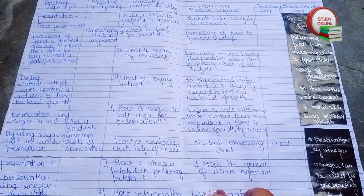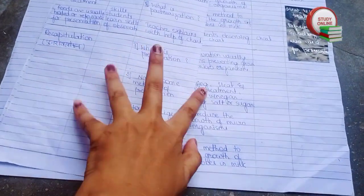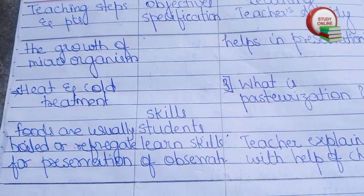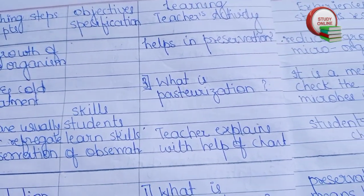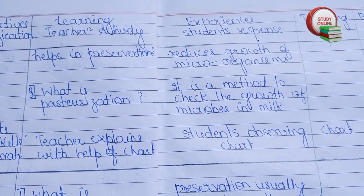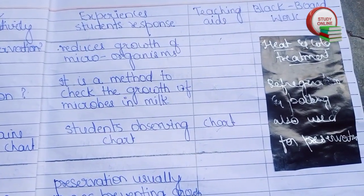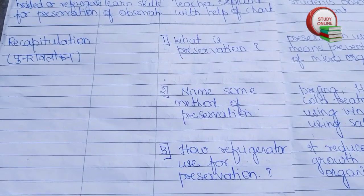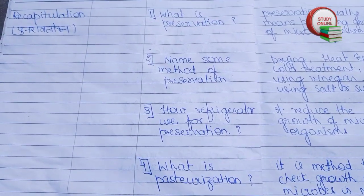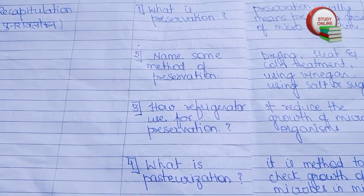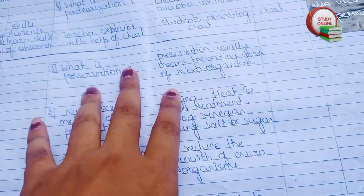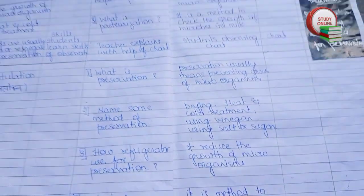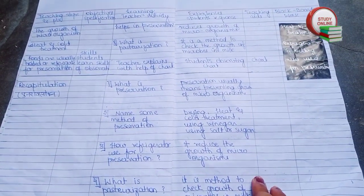Let's see the rest of presentation two. All the explanations we have to present to students, we write like this. Here are the questions and answers from students. For skills, the teacher explains with the help of a chart and students observe the chart. For recapitulation, I have added four questions — do not add more than five questions. Here are the answers we expect from students, and this is the overall look of presentation two and the recapitulation part.